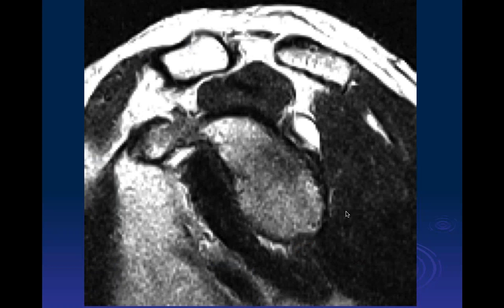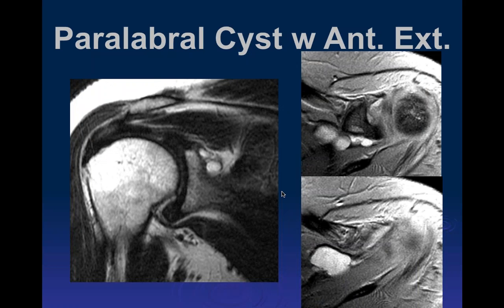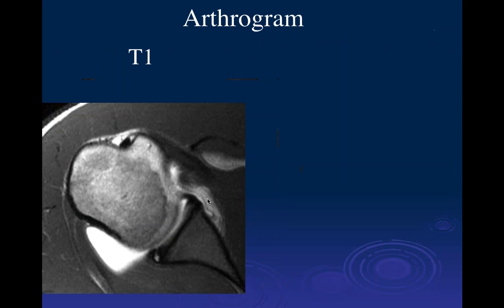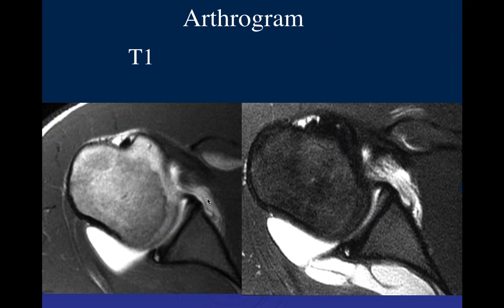Next case: a coronal T2 image showing an oval-shaped cystic lesion adjacent to the labrum — this could be a paralabral cyst, with extension up into the suprascapular notch.